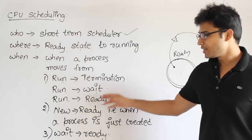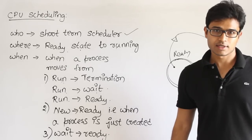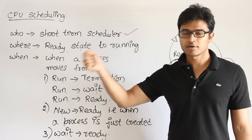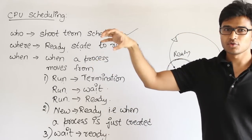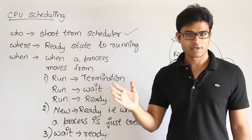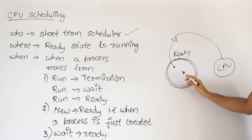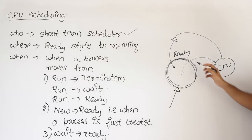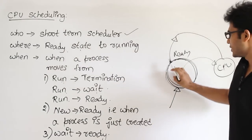The second way a running-to-ready transition happens is due to priorities. Whenever a new process joins the ready queue with a higher priority than the currently running process, we pull out the lower-priority process from the CPU and give it to the higher-priority one. The lower-priority process was running simply because the high-priority process was not available until now.